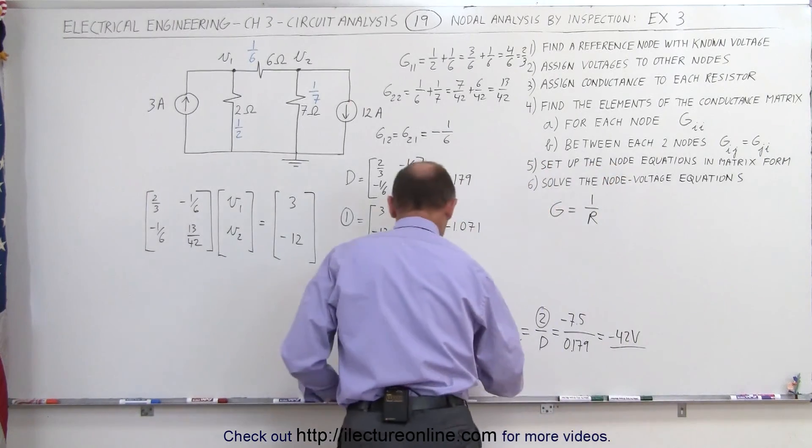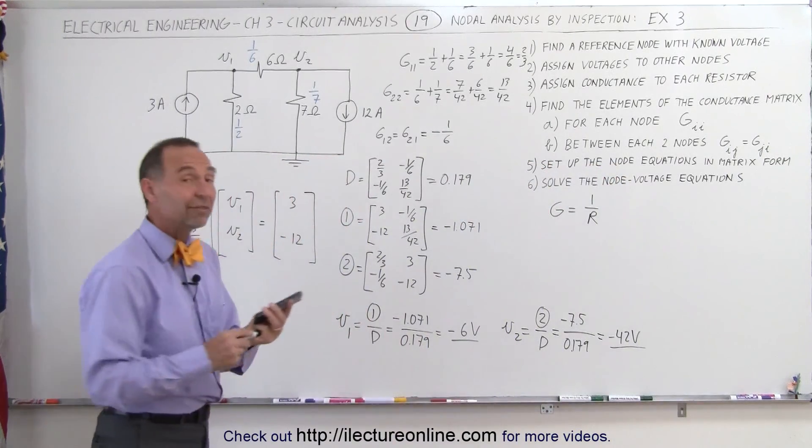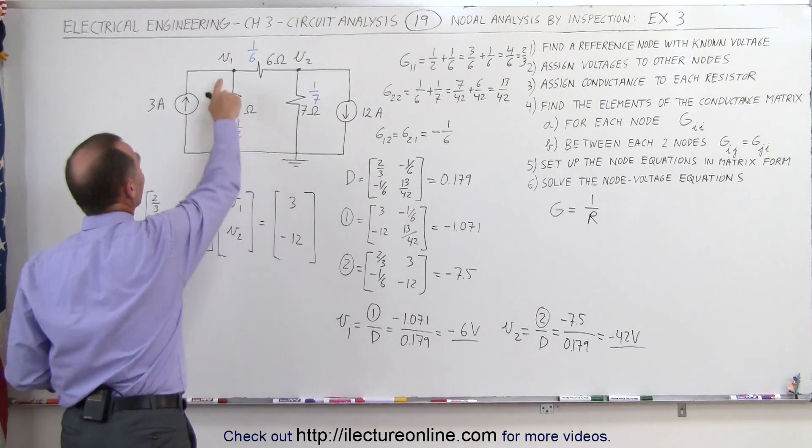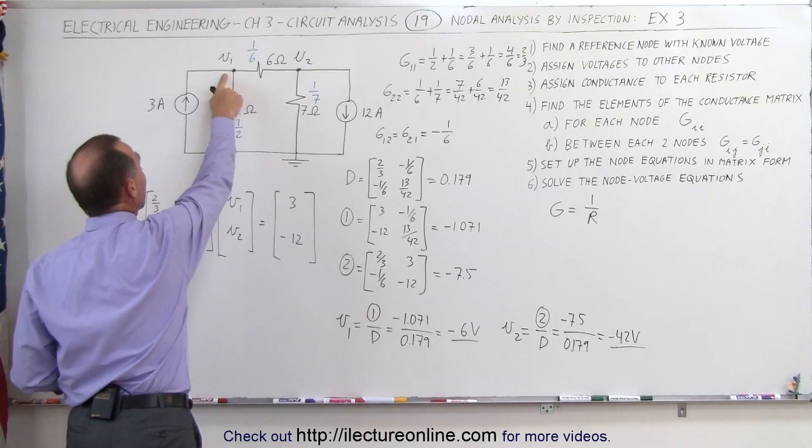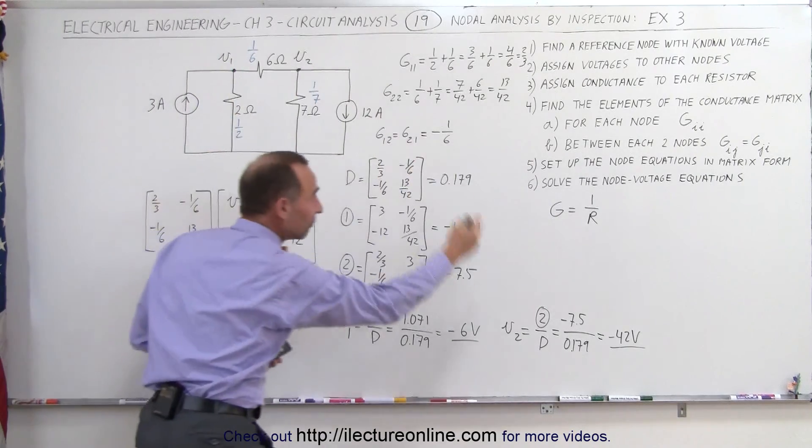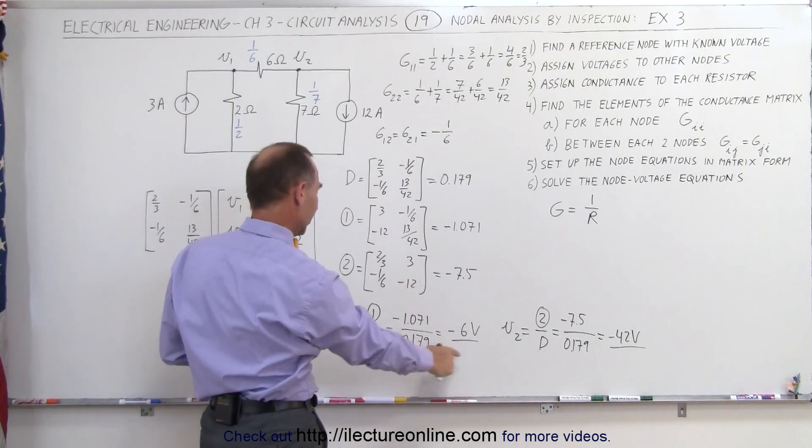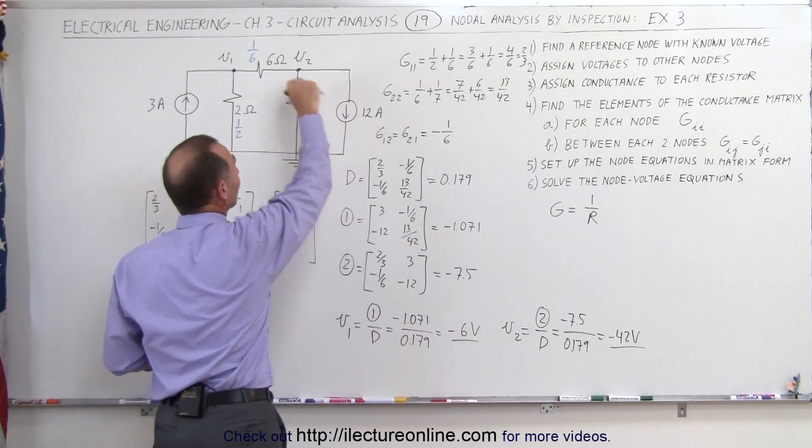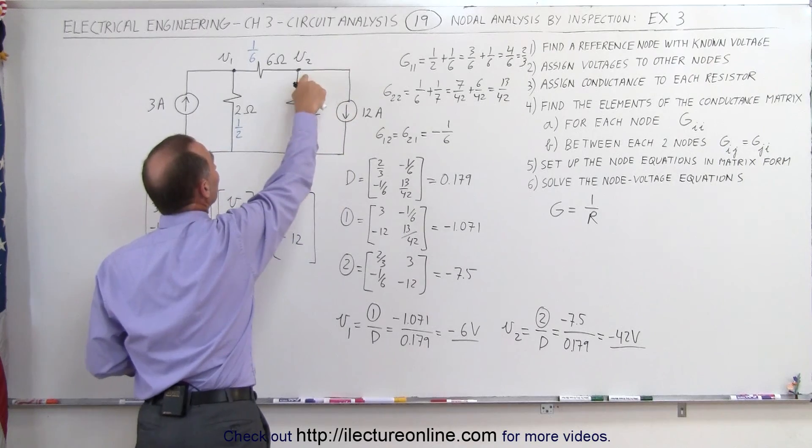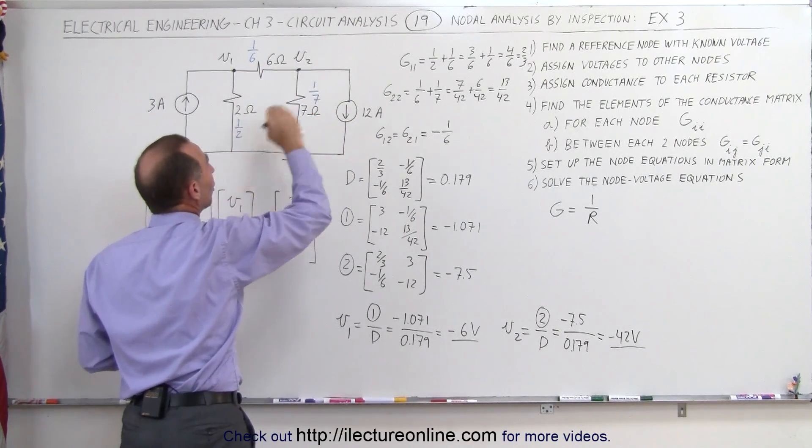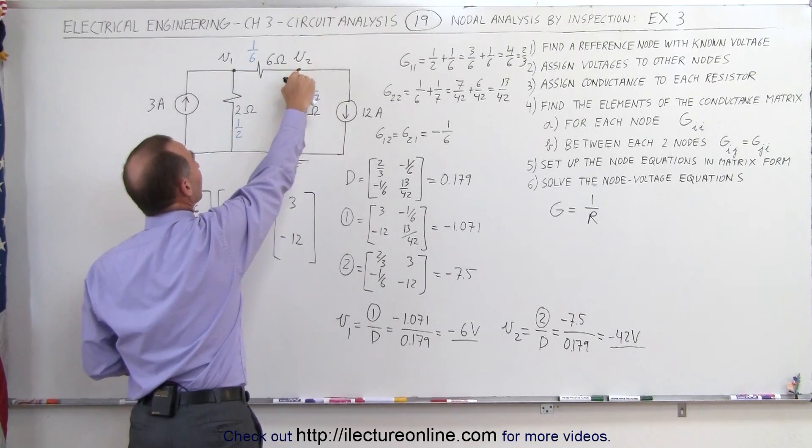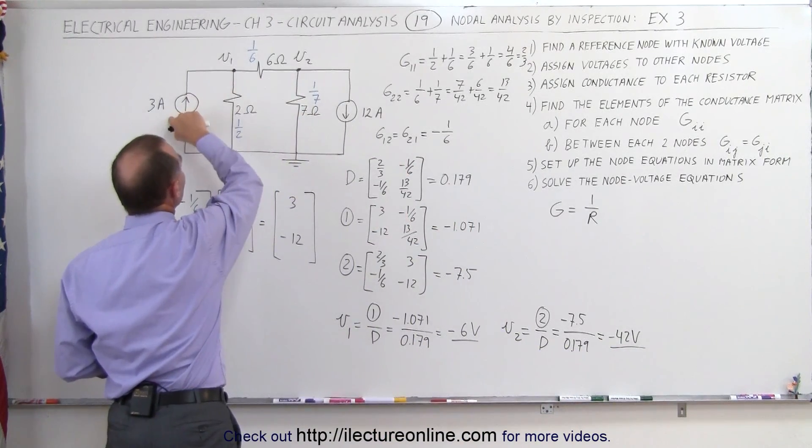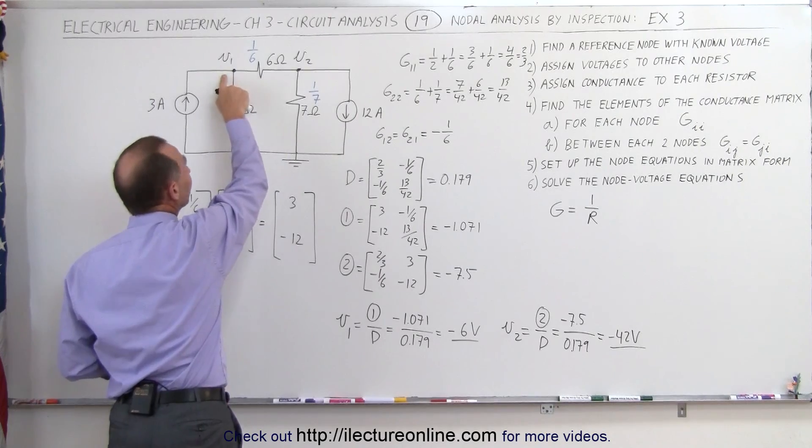It's a negative 42 volts and a negative 6 volts, and let's see if that even makes sense. When you drive 3 amps of current from the zero reference point to here, I would expect this to be a higher voltage, and it turns out V1 is a negative 6 volts, but then I look on the other side of the circuit and I see a 12 amp current being driven away from V2, which is of course connected to V1, which would plunge this voltage to a much lower voltage, minus 42 volts.